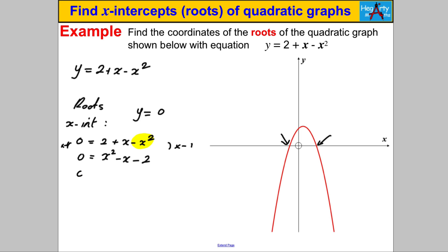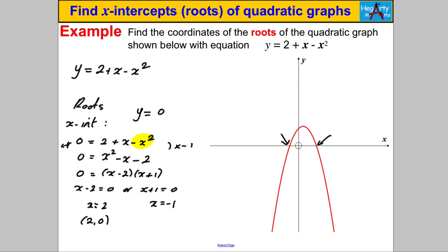Multiplying through by -1 gives 0 = x² - x - 2. That factorizes as (x - 2)(x + 1), so x - 2 = 0 or x + 1 = 0, giving x = 2 or x = -1. The coordinates are therefore (2, 0) and (-1, 0). One is to the right of the y-axis, one to the left at -1, and they fit the graph perfectly.